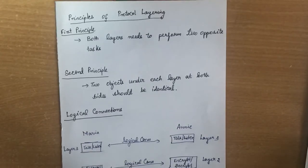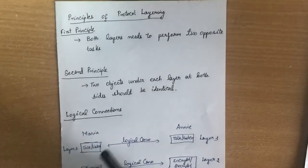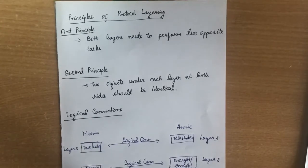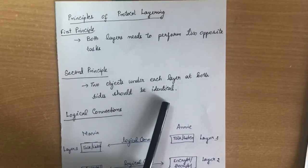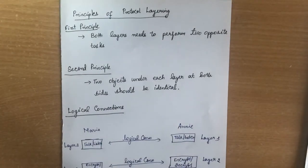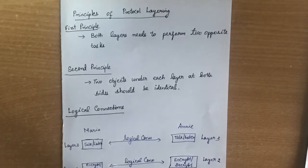Likewise, if layer three on Maria's side is performing 'listening,' then layer three on Annie's side should perform 'talk.' That is the first principle. The second principle states that the two objects under each layer on both sides should be identical. For example, if layer one is performing 'send mail' or 'receive mail,' the other side should also perform the same operation. These are the two principles to follow for protocol layering.